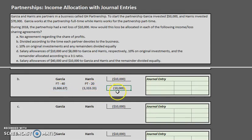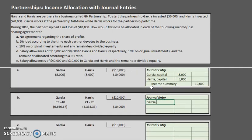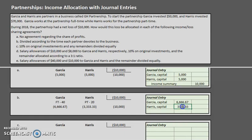Just like before, Garcia's capital goes down by $6,666.67 — a debit to that capital account. Harris's capital also goes down by $3,333.33 — also a debit. And income summary, assuming your textbook uses it for the closing process, is credited for the full $10,000 net loss.